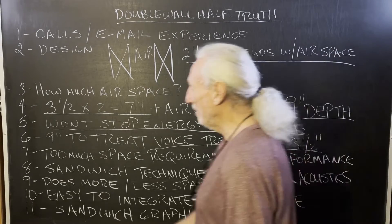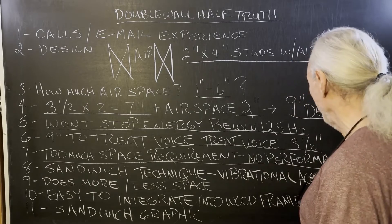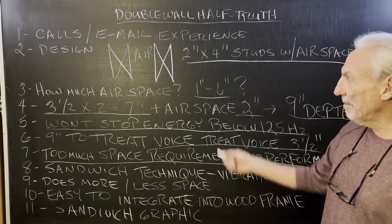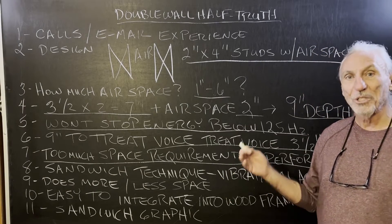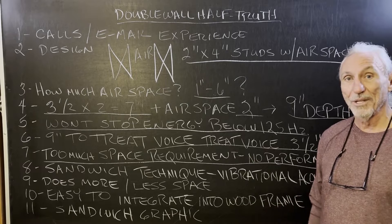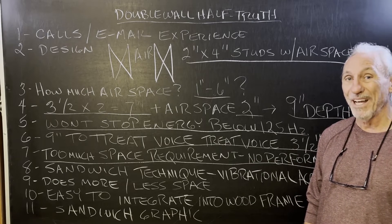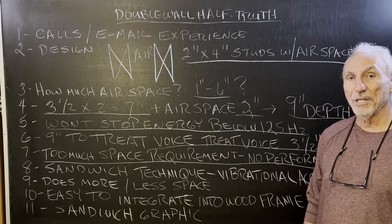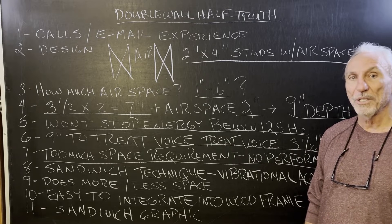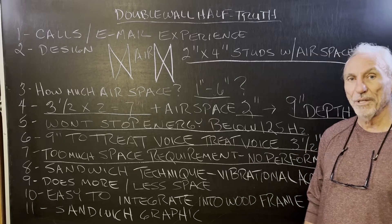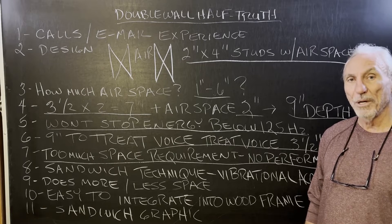So the bottom line with this structure is it's too much space requirement and no performance. If you're going to give up nine inches of space, you should have full frequency range of treatment, right? You should be able to cover all frequencies at nine inches. Our carbon panels, 12 inches deep, starts at 40 Hertz, goes to 6,300. So they'll give you an idea of what you can do in 12 inches.